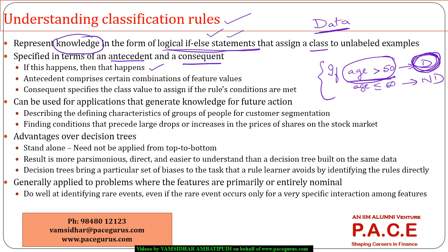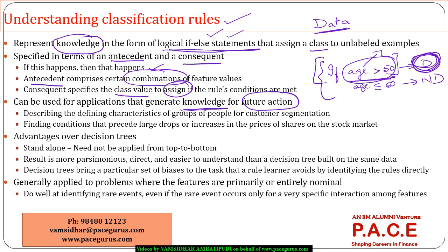Instead of a tree structure, we create a set of rules in the form of if-else statements. We have an antecedent and a consequence. The antecedent can be a combination of features — the more features used, the more complex the rule — and the consequence is always the predicted class. This knowledge is created from data and used for future action.